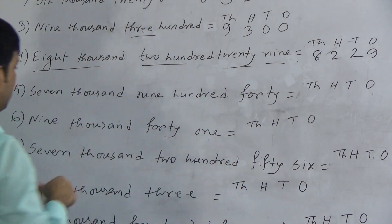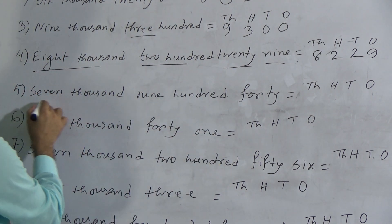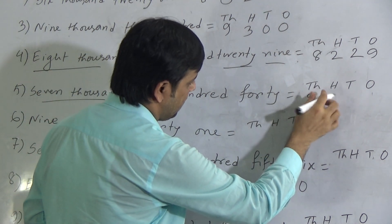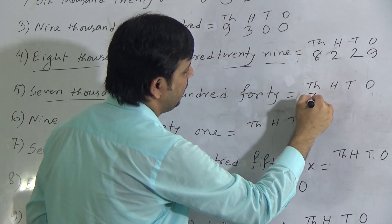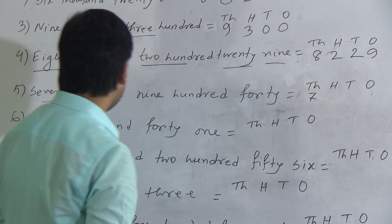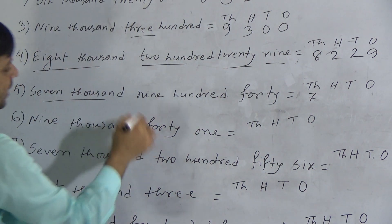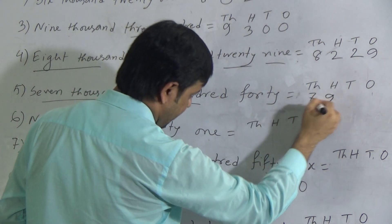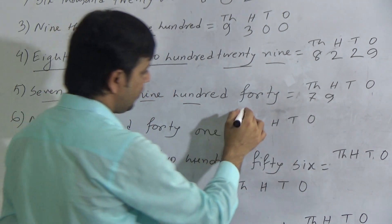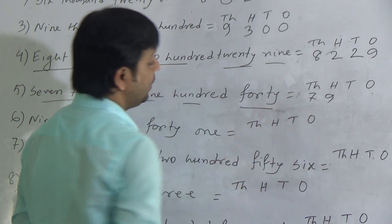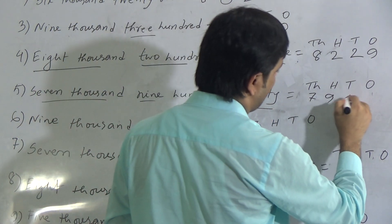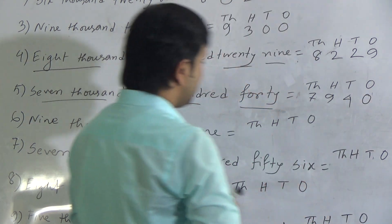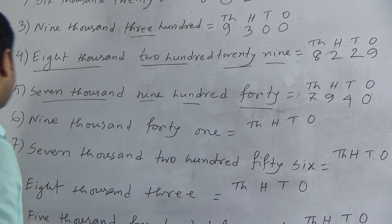Question 5: seven thousand nine hundred and forty — 7940. Here is 7000, so we write 7 below thousands. Then 900, so we write 9 below hundreds. To write 40, we need 4 in tens position and 0 in ones position. This one is done.